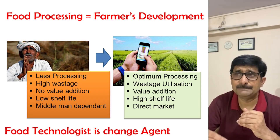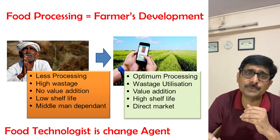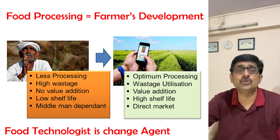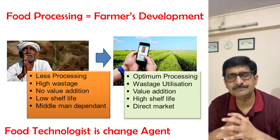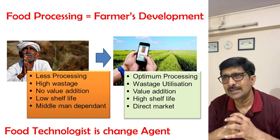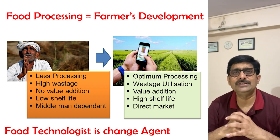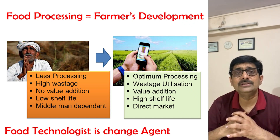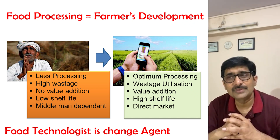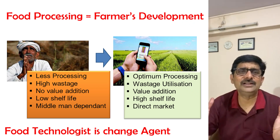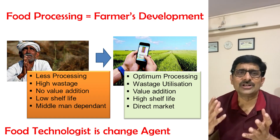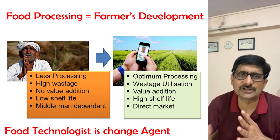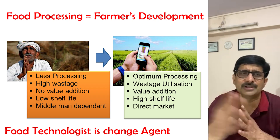People say that when you invest 1 crore rupees in food processing, you generate 10 jobs directly and indirectly. But if you invest 1 crore rupees in IT, you only generate one job. So for a country like India, naturally agricultural-based technologies — agricultural technology and food technology — are very, very important.